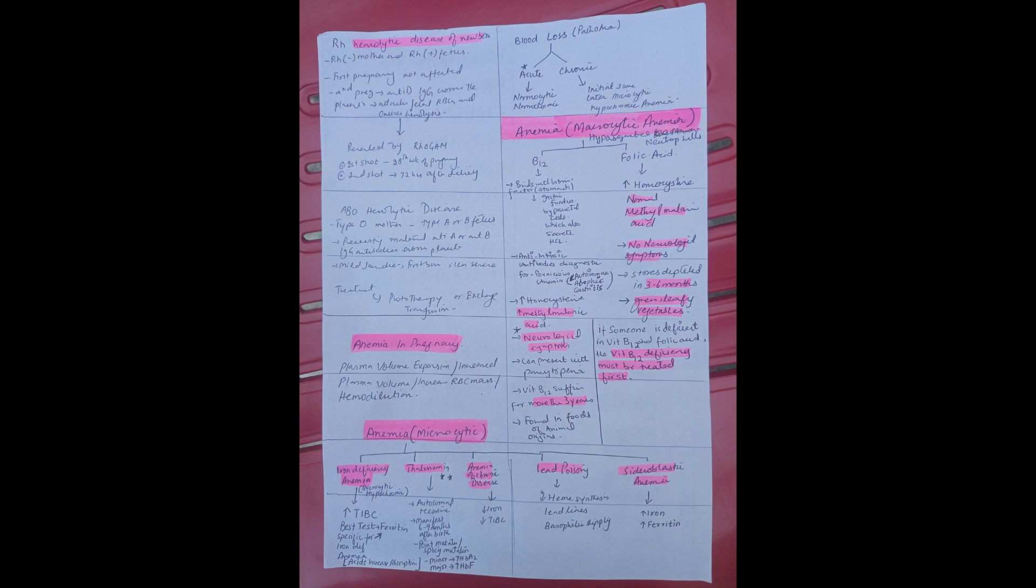In lead poisoning, basophilic stippling is seen. And in sideroblastic anemia, there is going to be increased iron and increased ferritin.